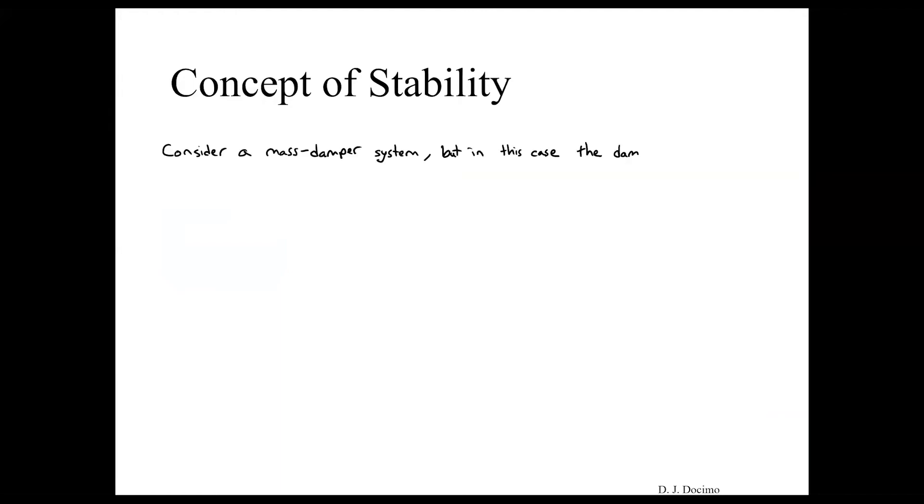But in this case the damping ratio or the damping constant is less than zero. So we have our typical mass damper system with a state x1 representing our velocity.